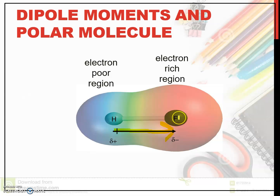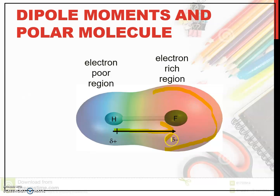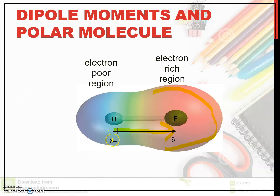Because chlorine is more electronegative compared to hydrogen, the electron is attracted more towards chlorine, making that region very high and rich in electrons. So, chlorine is partially negative. For hydrogen, it is an electron-poor region since electrons are more attracted towards chlorine.